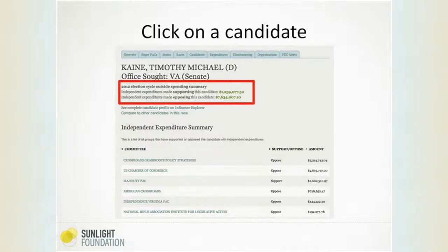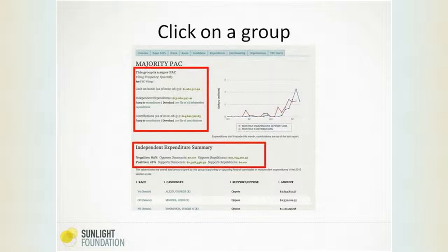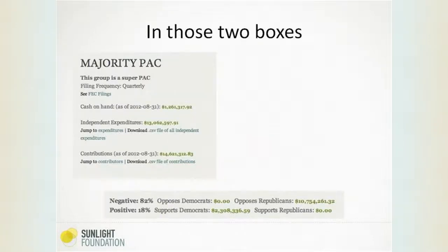We can see all the groups involved in this election and running ads in Virginia to influence the outcome. By clicking on a candidate, you can get a summary of how much is being spent supporting or opposing him, plus that same summary of groups — which is pretty valuable. Let's click on a group to get a profile of one of these outside spending groups. This is the Majority PAC — it shows you that we label it as a super PAC, and if it's not a super PAC, it won't have that label. We tell you how often it files with the FEC, you can jump to or download the independent expenditures, and you get the independent expenditure summary: how much they're spending on negative ads versus positive ads, and the party breakdown of that spending.